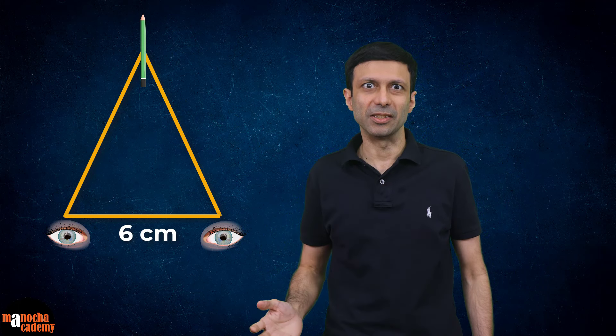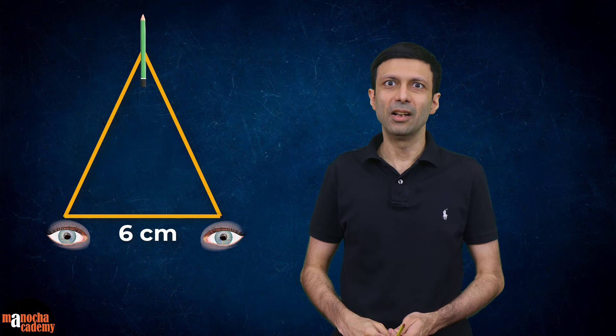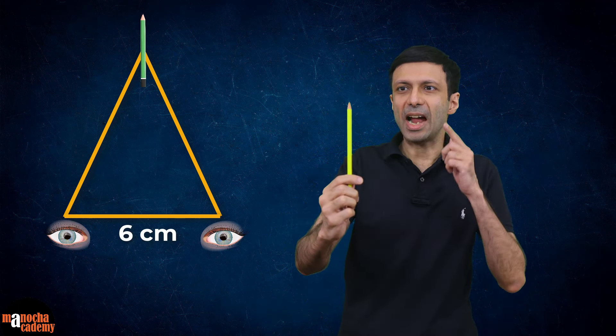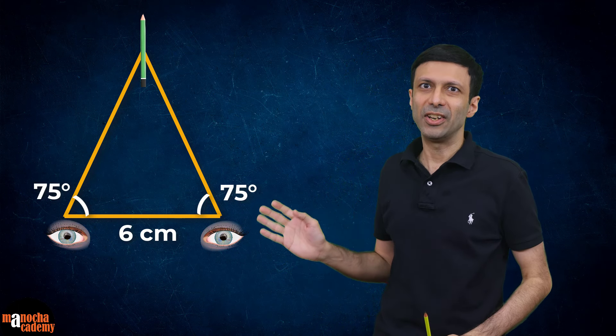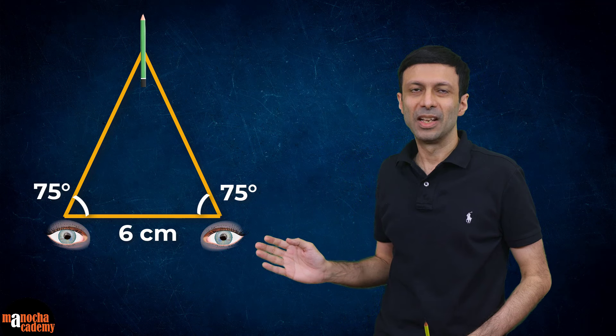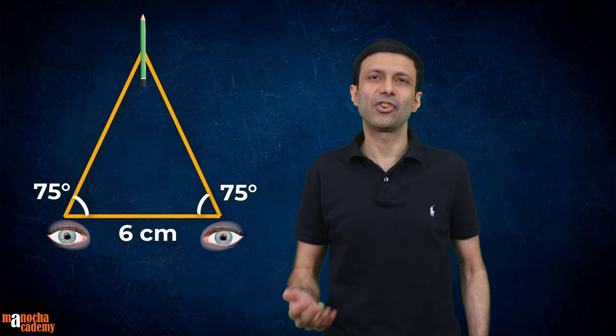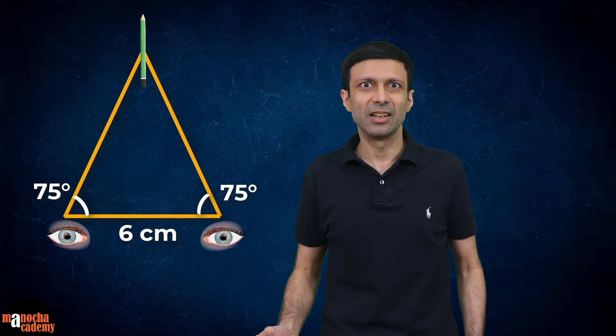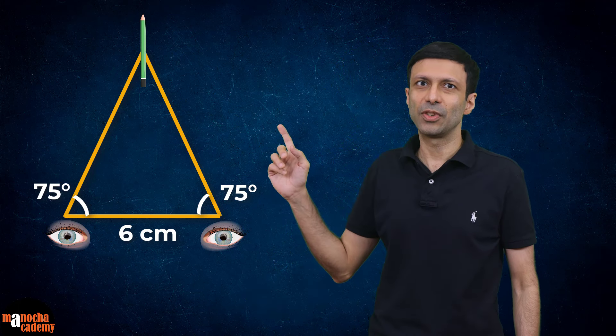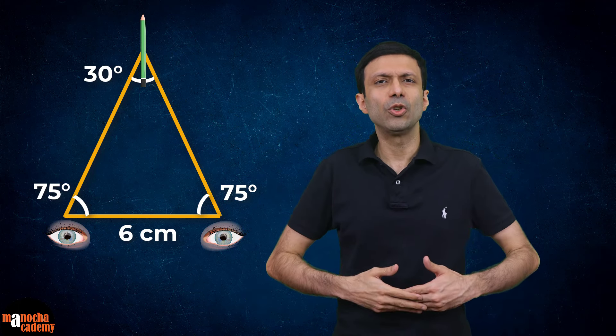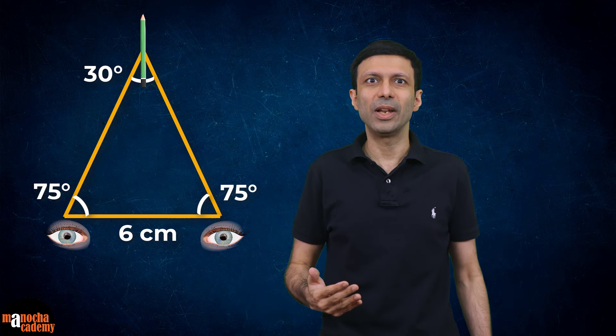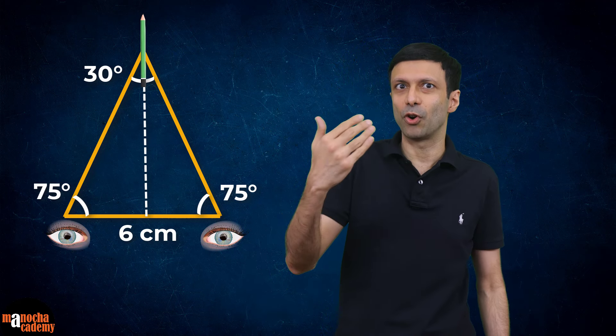Let's say the distance between your two eyes is 6 centimeters, and you measure the angle formed by the pencil at each of your eyes, and it turns out to be 75 degrees as shown in the triangle here. Since the sum of the angles of a triangle is 180 degrees, the angle at the vertex of the triangle is going to be 30 degrees. Now you can use some trigonometry and calculate the distance of the pencil from you.